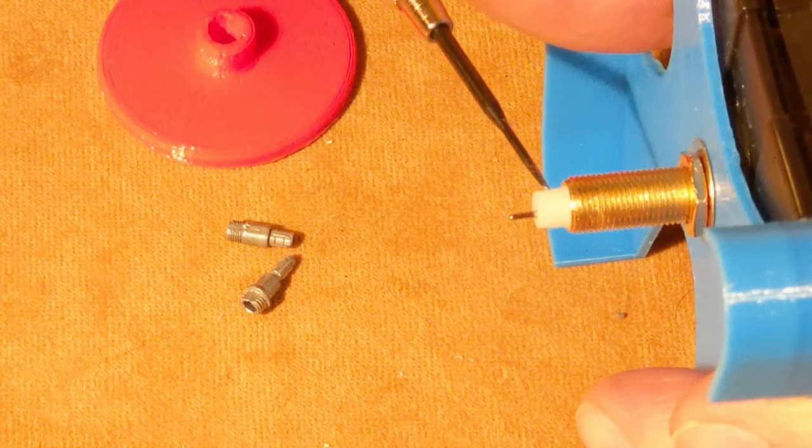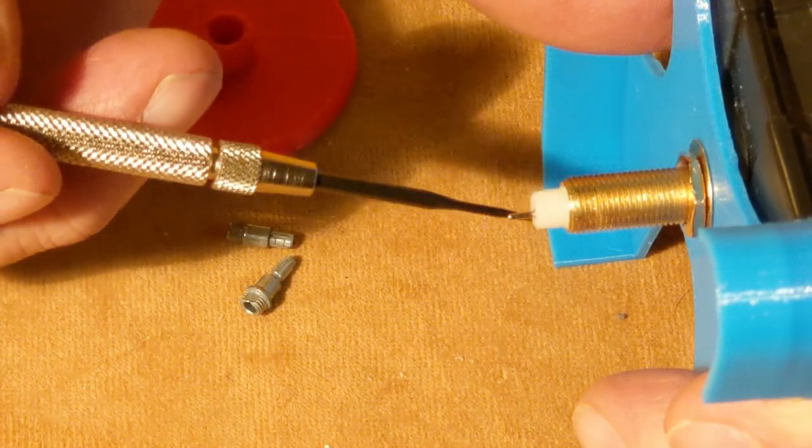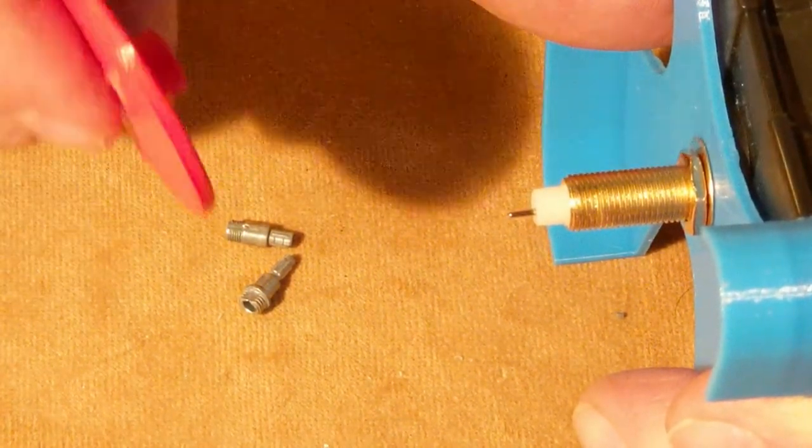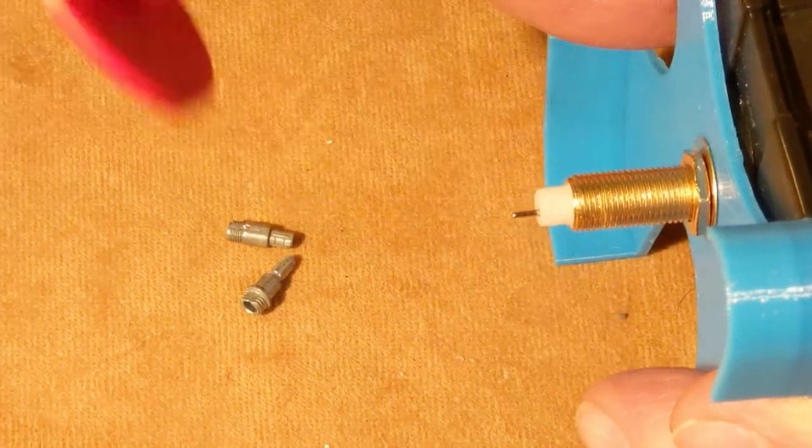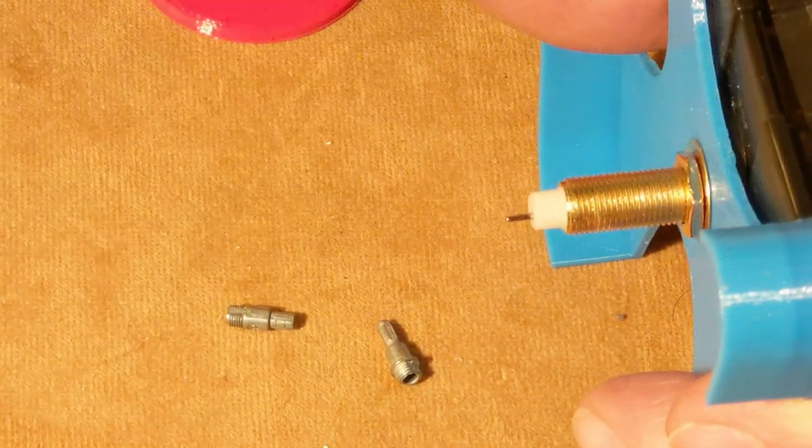Now I can just put a little adhesive right here on this leading edge of this hour hand shaft, and I can slip this on in place and won't have any problems with it locking up into the minute hand.